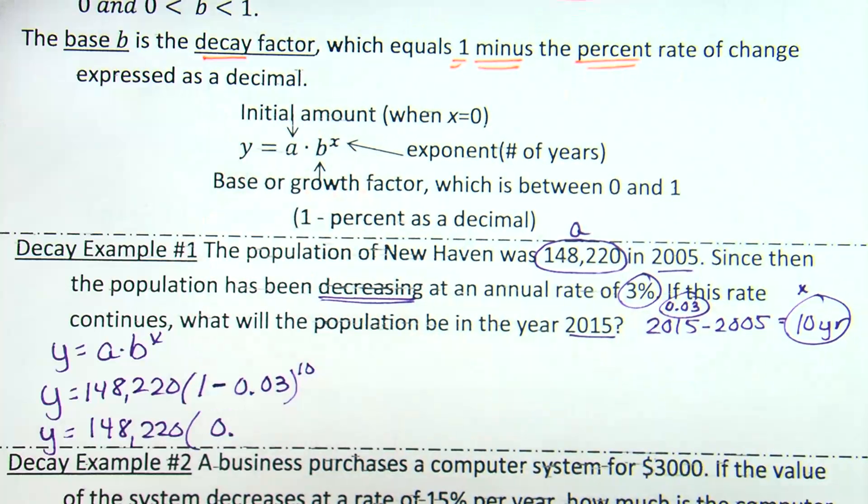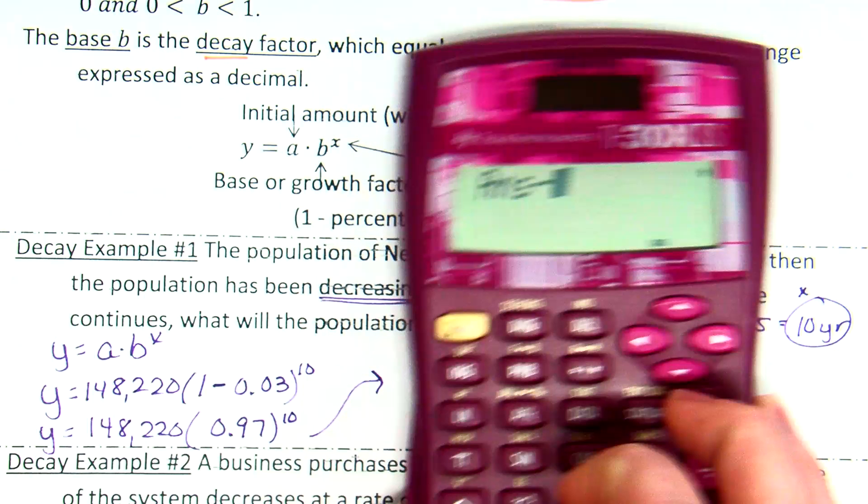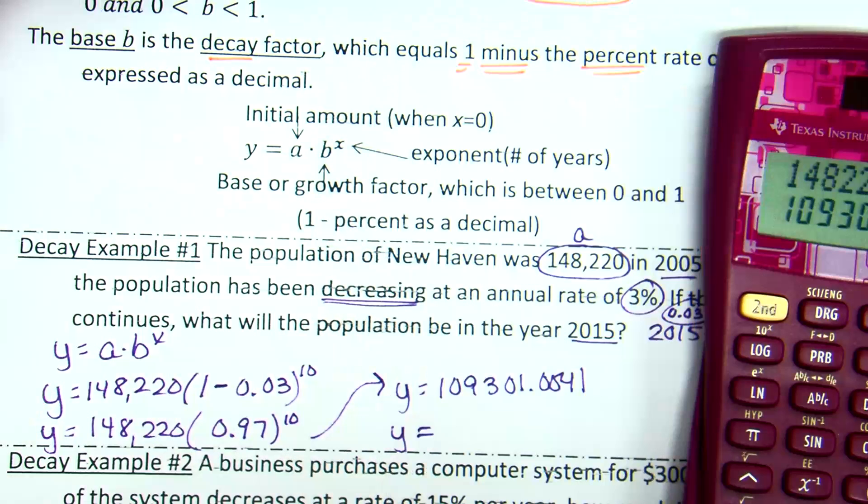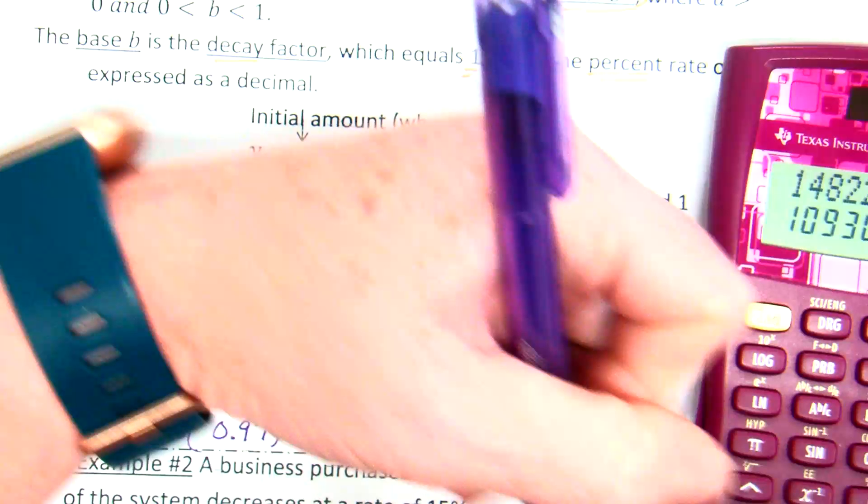So, plug it in the calculator. 148,220 times 0.97 raised to the 10th. Does your answer match my answer? 109,301.0041. This, again, is population, right? Yep. So, I'm going to go whole number. 109,301. And that is going to be people. I don't really know a lot of people, right? Well, depends on how big the place is, I guess.